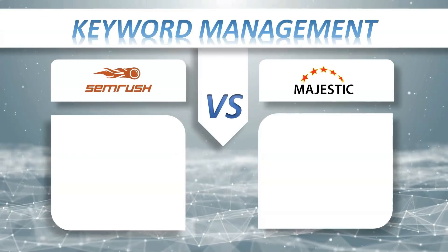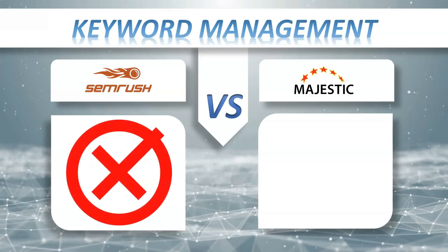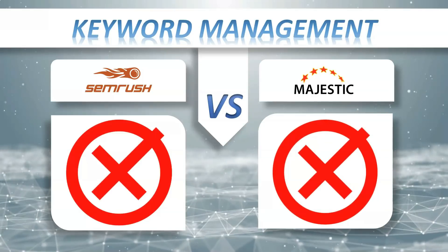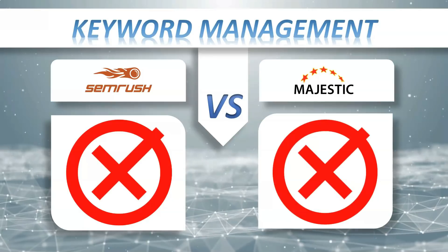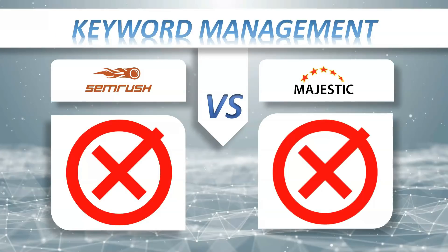Keyword management: SEMrush doesn't have it, Majestic doesn't have it either. Keyword management is an innovative and multi-phased approach to discovering, analyzing, grouping, and organizing large numbers of keywords, with the objective of prioritizing, collaborating, and acting on keyword data to build and optimize your PPC or SEO research marketing campaign.